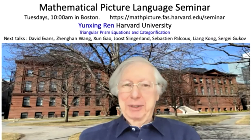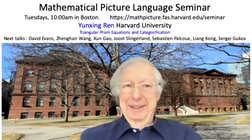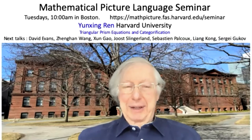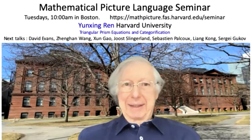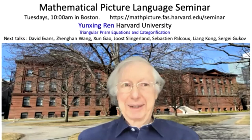Welcome to our Picture Language Seminar. Today is special because it's our 25th talk that will be on YouTube. We have interesting upcoming talks next week — David Evans, the week after Zheng Gan Wang, and you can see a list of speakers for successive weeks. For our 25th talk, we're very happy to have Wenqing Ren. He's a postdoctoral fellow at Harvard and will be talking about joint work with Zheng Wei and Sebastian. They have a new set of equations which are very exciting for studying the question of categorification. Wenqing, why don't you share your screen and start?